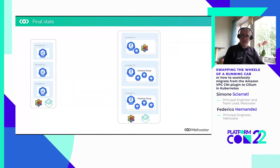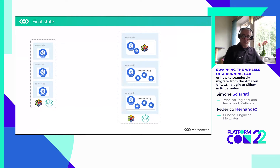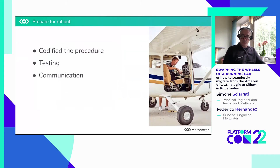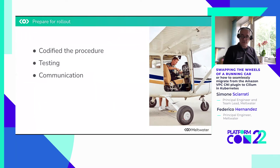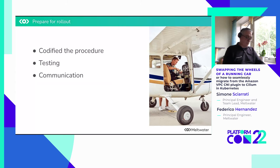We did this a couple of times to test the procedure — testing the sequence of commands to use, when to deploy what, when to start what, when to drain which node. After doing that, we codified the entire procedure so that we could run it automatically. We tested it, and in the end we decided to roll this out to production and communicated this to our users.